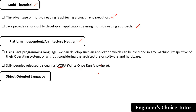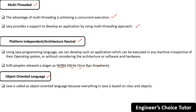The next buzzword is object oriented. Java is called an object-oriented language because everything in Java is based on classes and objects. In fact, in Java the data is stored in the form of objects. Java is not 100% object oriented — it is partially object oriented. We will see the complete story of object-oriented language in further lectures.